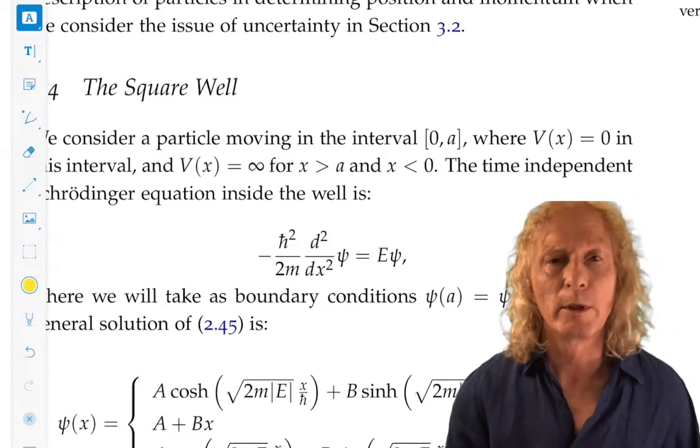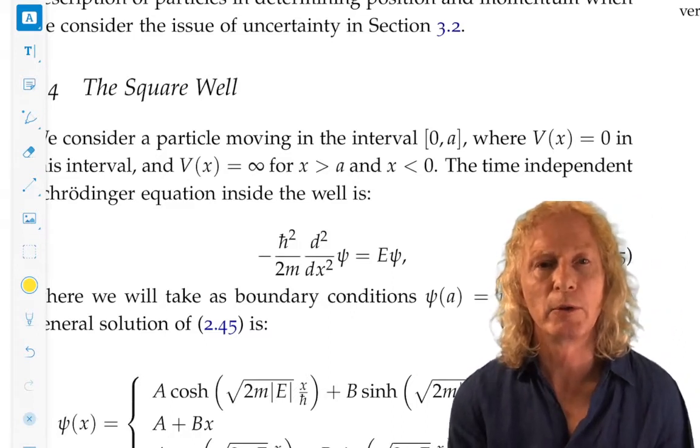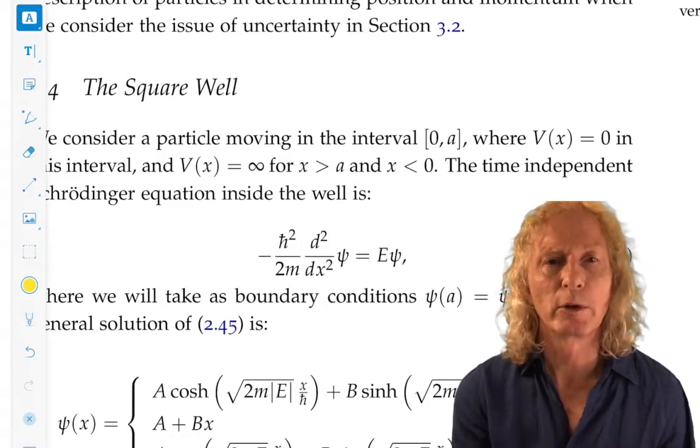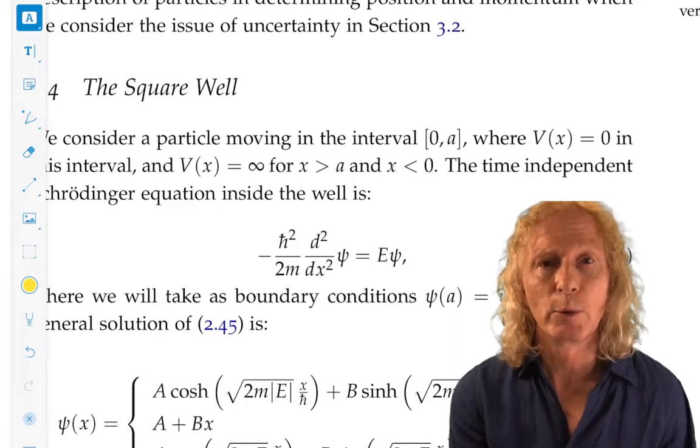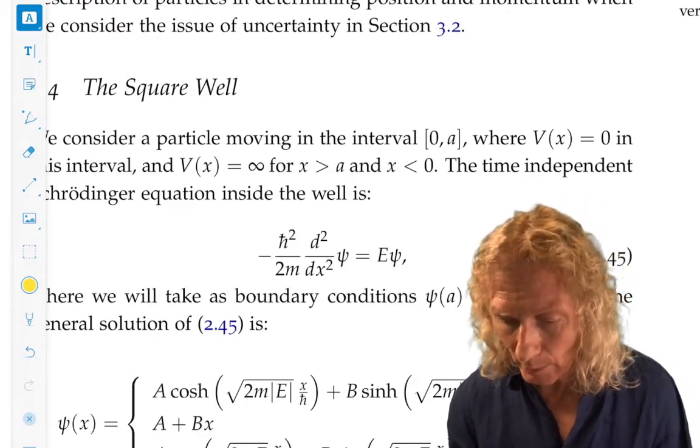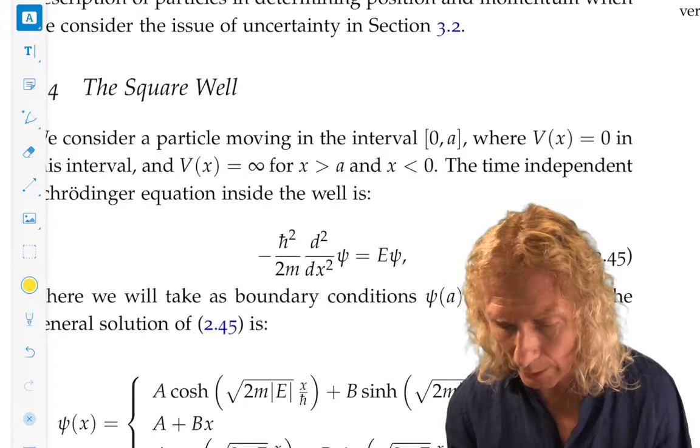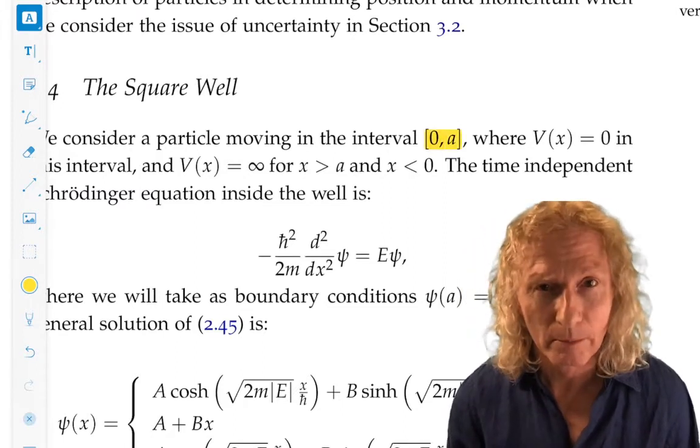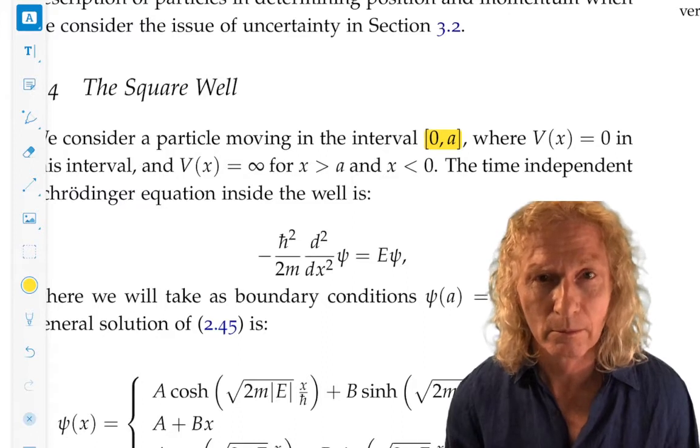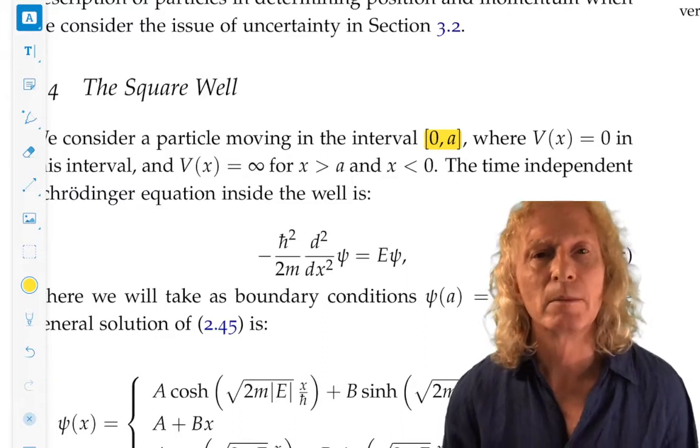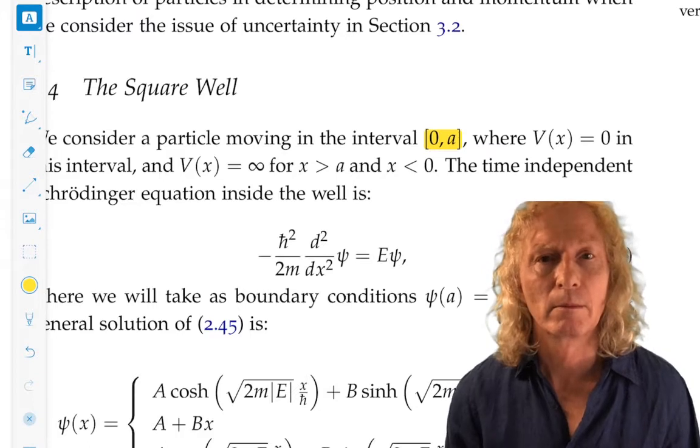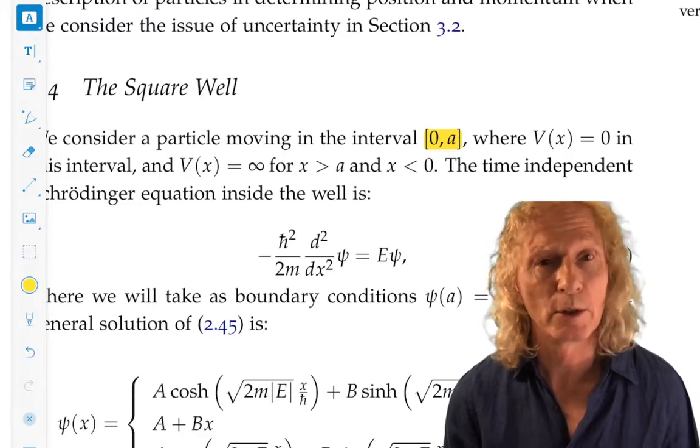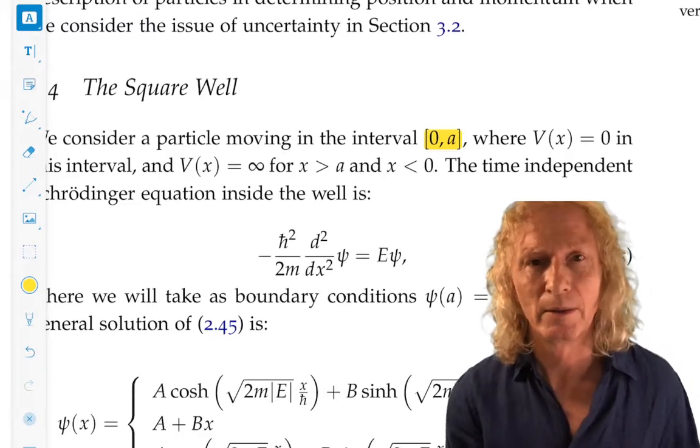Well, this is one-dimensional, so the problem is the particle is moving on the line, but we're going to restrict ourselves to a finite interval, say zero to a, where the potential is zero in that interval, like a free particle, but it's infinite outside that interval. So the equation makes no sense outside that interval.